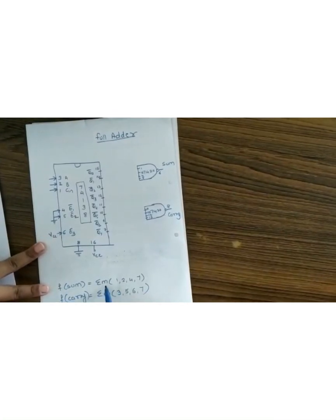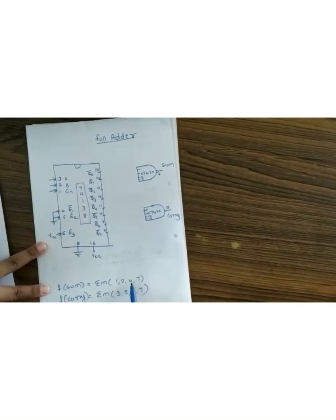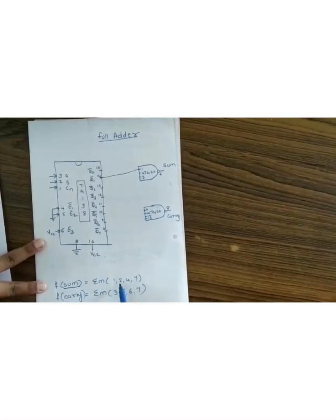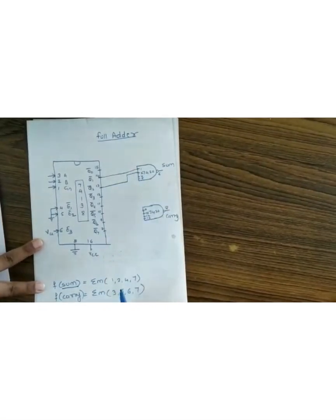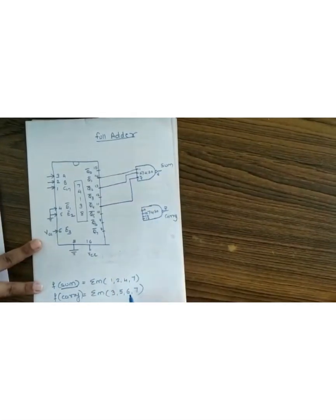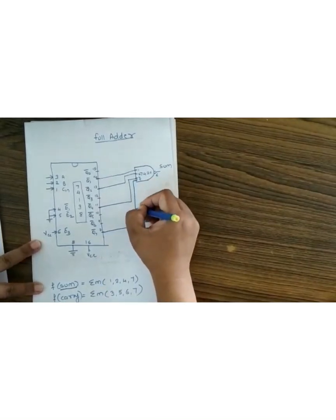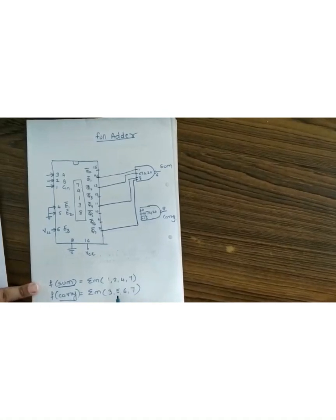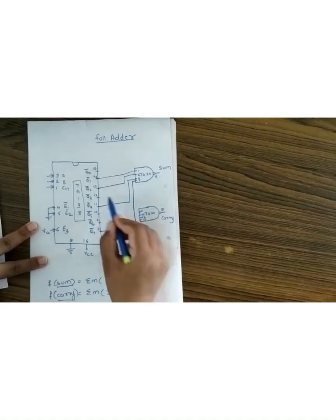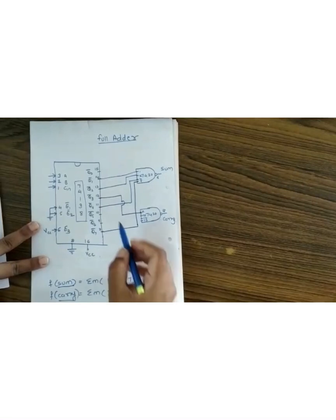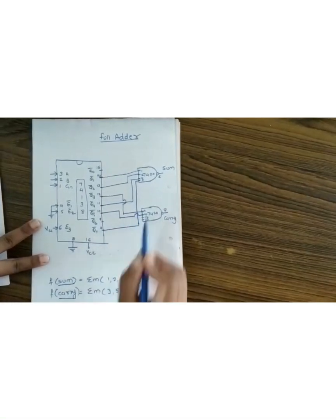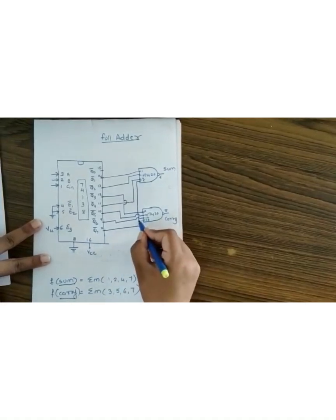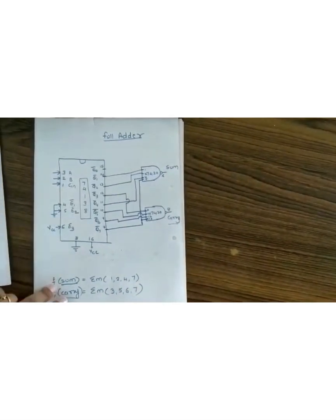For the sum function m(1, 2, 4, 7), we use outputs Q1, Q2, Q4, and Q7. Q1 is at pin 14, Q2 is next, then Q4, then Q7 — these go as the four inputs to the first NAND gate of 7420, giving the sum output. For carry, the equation is m(3, 5, 6, 7), so we use Q3, Q5, Q6, and Q7. These four outputs connect as inputs to the second NAND gate of 7420, giving the carry output.